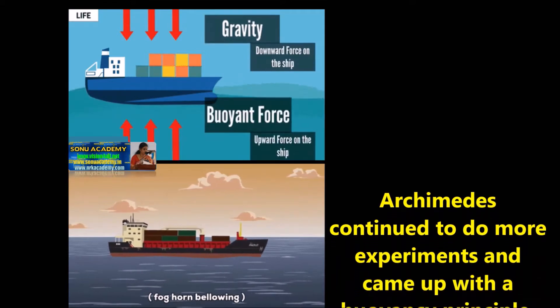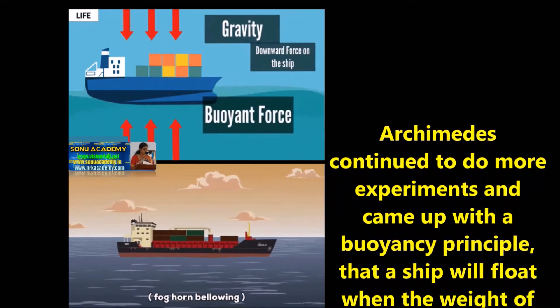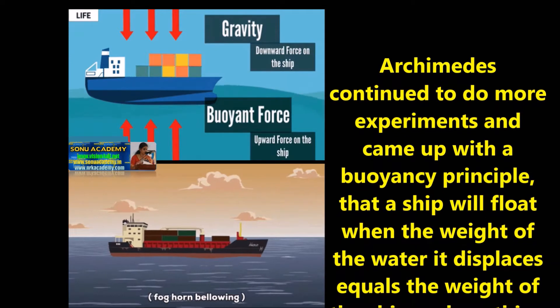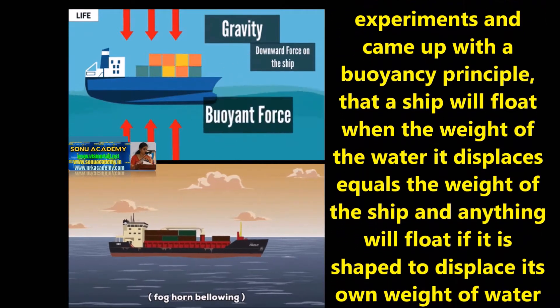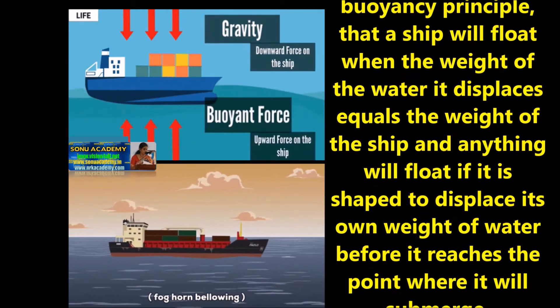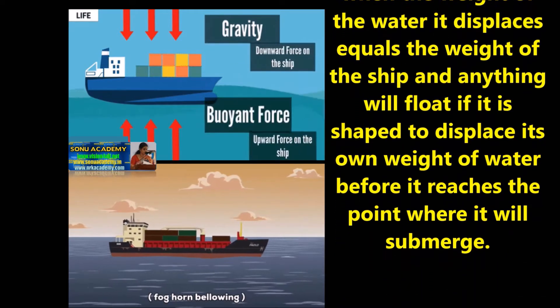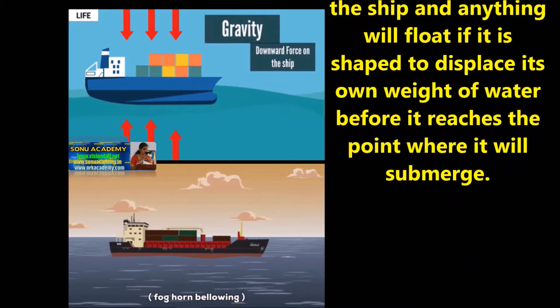Archimedes continued to do more experiments and came up with a buoyancy principle that a ship will float when the weight of the water it displaces equals the weight of the ship, and anything will float if it is shaped to displace its own weight of water.